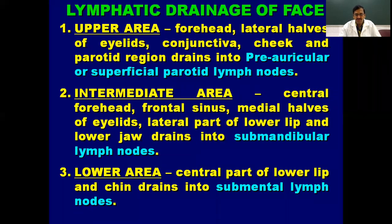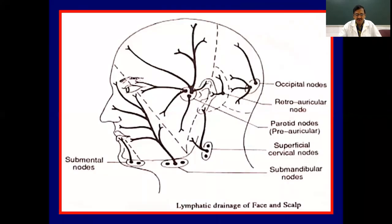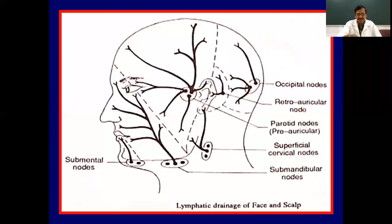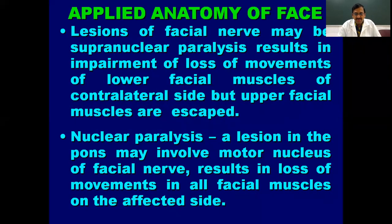For lymphatic drainage: the upper area — forehead, lateral half of eyelids, conjunctiva, cheek, and parotid region — drains into the pre-auricular or superficial parotid lymph nodes. The intermediate area — central forehead, frontal sinus, medial half of eyelids, lateral part of lower lip, and lower jaw — drains into the submandibular lymph nodes. The lower area — central part of lower lip and chin — drains into the submental group of lymph nodes.